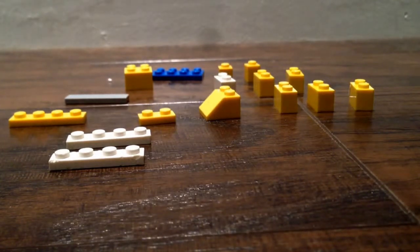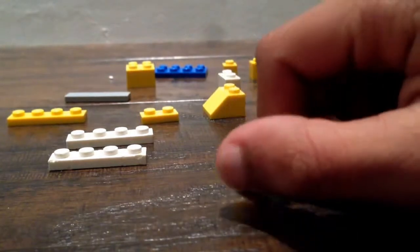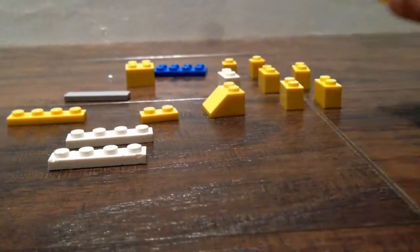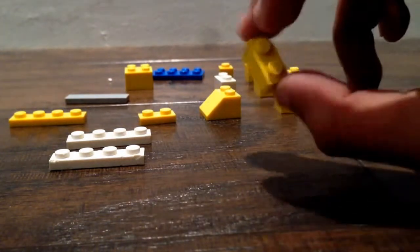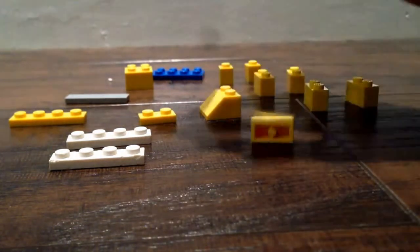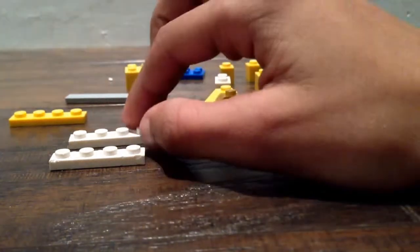16 pieces, that's all you need. So let's go ahead and show you here now how to build this. You're going to need six 1x2s, five in the same color and then one in a different color.